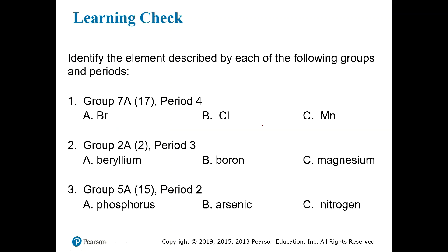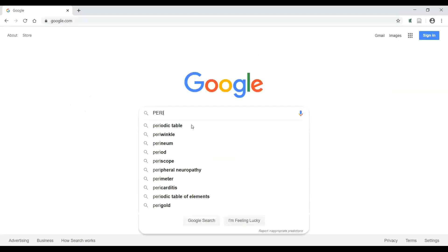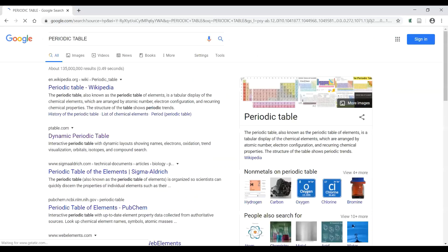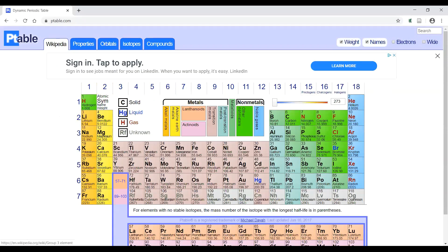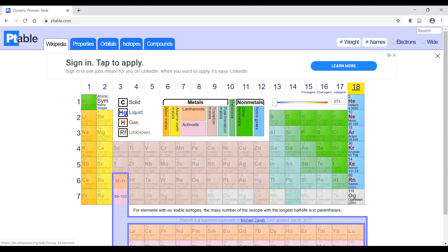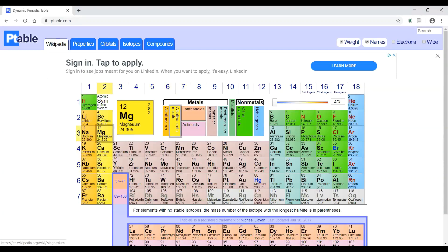If we are given the period and group for an element, we should be able to determine what element it is we're talking about. In order to do that, we'll need to use the periodic table. Before we can answer any of these questions, we're going to want to bring up a periodic table. If we're at home, we can just go to Google and type in periodic table. Wikipedia comes up first, but this is one I like to use. It's actually just ptable.com. It's the dynamic periodic table and it's pretty useful for when you're working at home. You can hover the mouse over the column numbers, the group numbers. If you hover the mouse over that, it just highlights that group. If you hover the mouse over a period, it highlights that row or period.